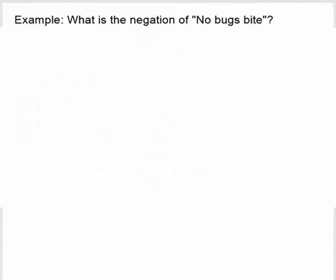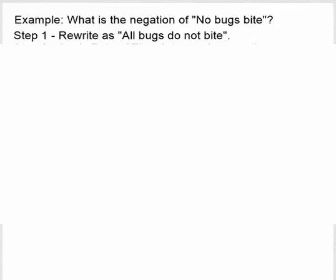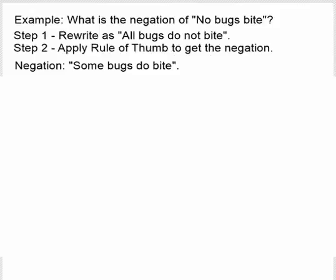Here's another example: what is the negation of 'no bugs bite'? We start by rewriting it in a form where we can apply the rule of thumb. In this case, we write it as 'all bugs do not bite.' Now we can apply the rule of thumb. The negation of 'all do not' is 'some do.' So we negate 'all bugs do not bite' as 'some bugs do bite,' or simply, 'some bugs bite.'